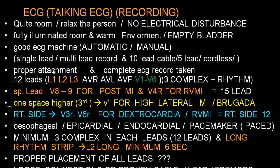Proper attachment should be done and you should take a complete ECG record including all 12 leads: Lead 1, Lead 2, Lead 3, AVR, AVL, AVF, and V1 to V6. In each lead you should have a minimum of 3 complexes. After finishing the 12 leads, you should also have a rhythm strip of minimum 10 seconds. The rhythm strip is either Lead 2 or V2, depending on which shows better complexes.